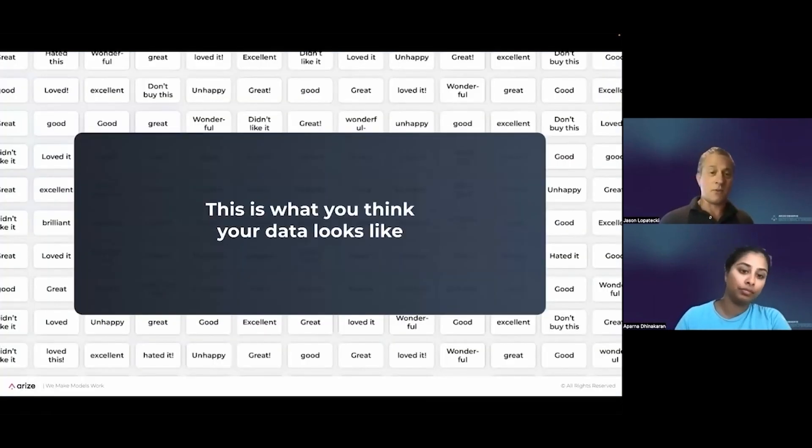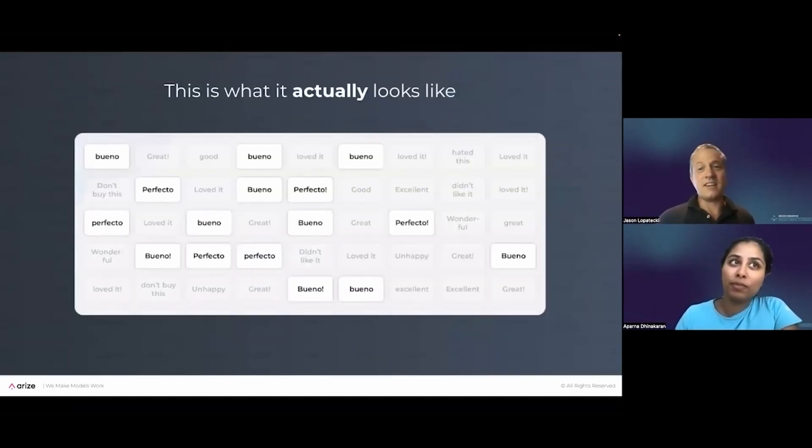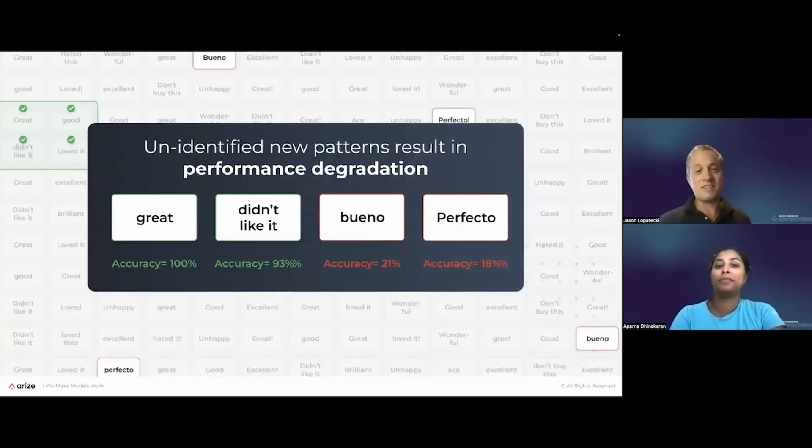And it's very different than the environment the model was built in, which typically is great. It's got English words, well-formed, very clean data, which is what the model is built on to act on. When you put the model in production, the data can look very different. It can be Spanish versus English words. The data can be drastically different than what you saw in your production versus your training environments. And what this means to teams is performance might drop.